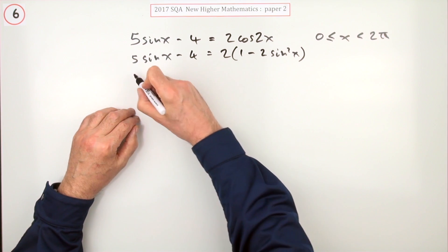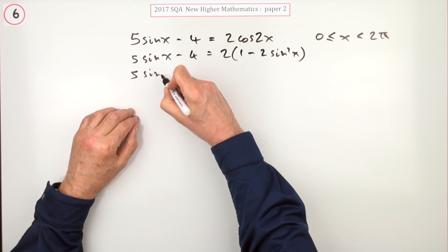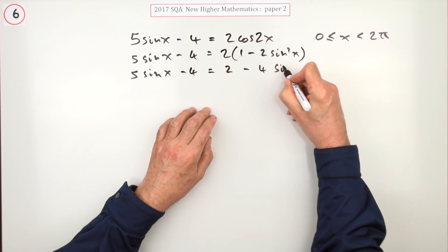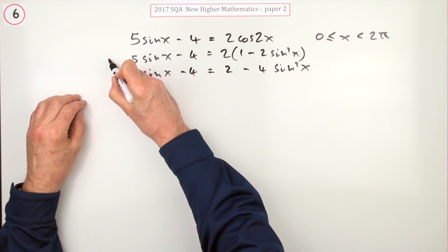Now you could just take it across just now. Maybe I'll just write it out again, so 5sinx - 4 is going to be 2 - 4sin²x.